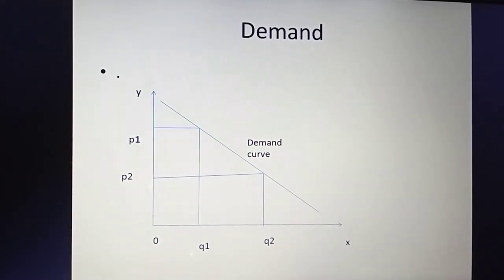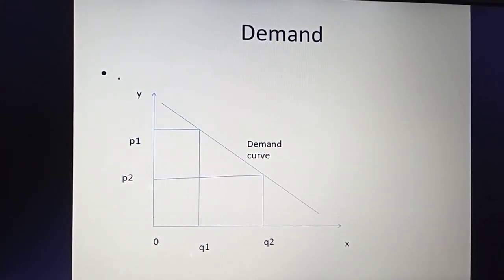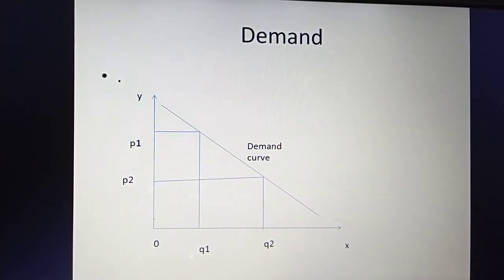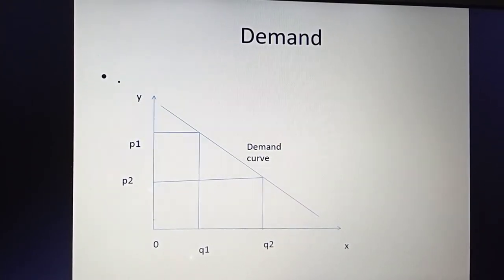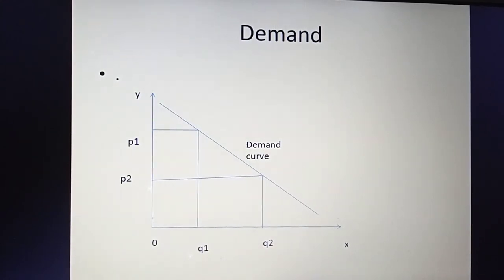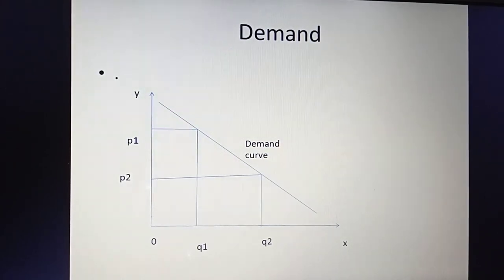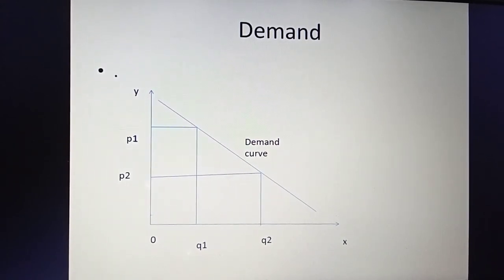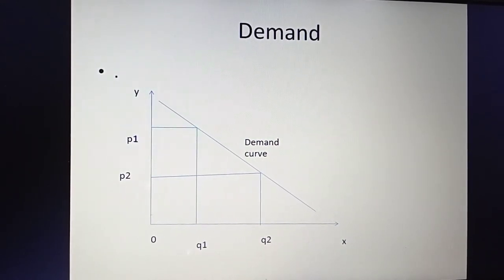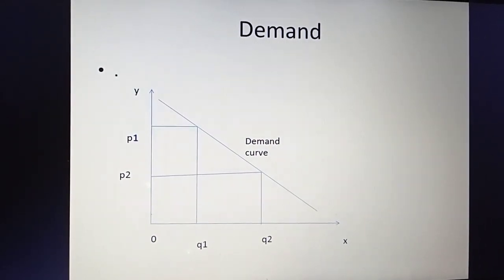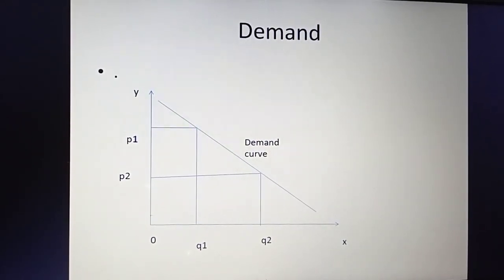From this diagram, if price increases the quantity demanded falls, and if price falls the quantity demanded increases. There is a negative or inverse relationship between the price of a commodity and the quantity demanded of that particular commodity. Due to this opposite relationship, the demand curve is a downward sloping demand curve from left to right. So this is the demand curve.